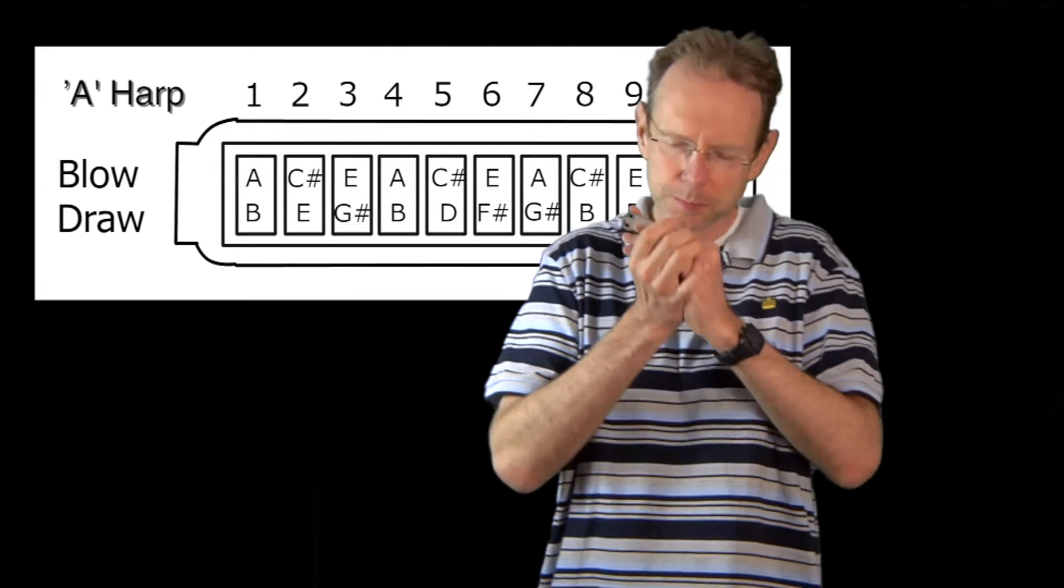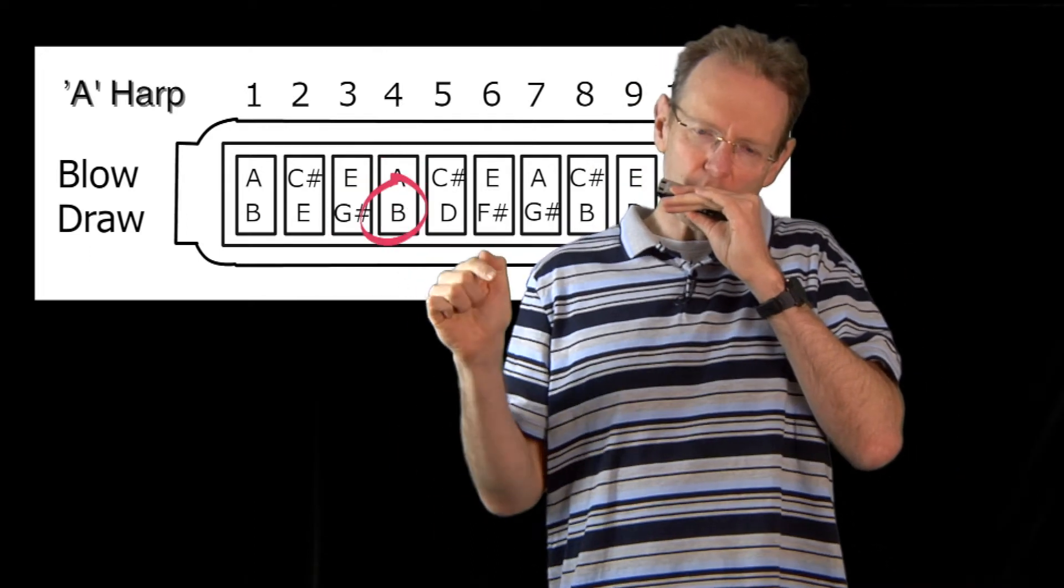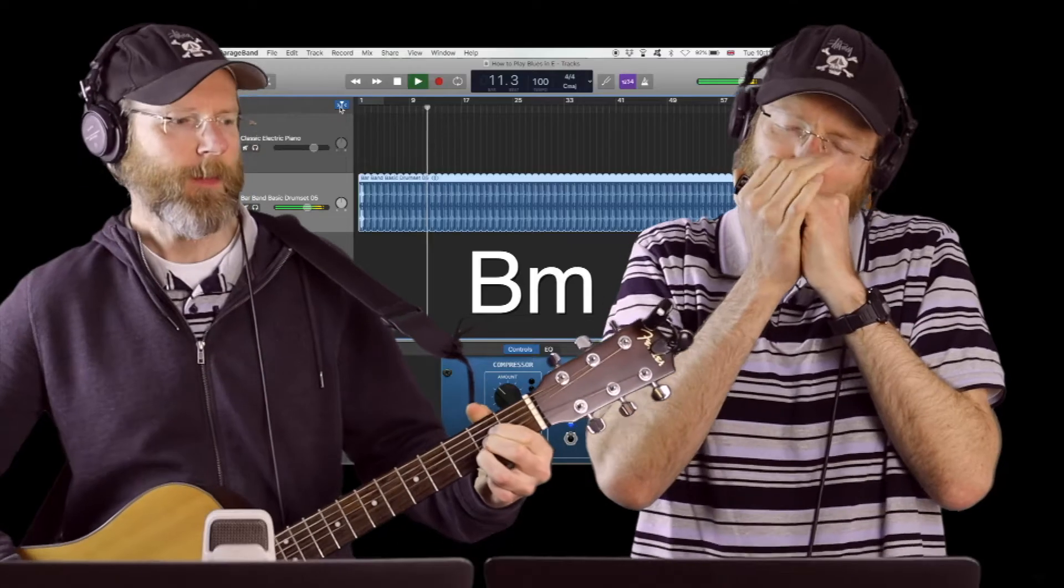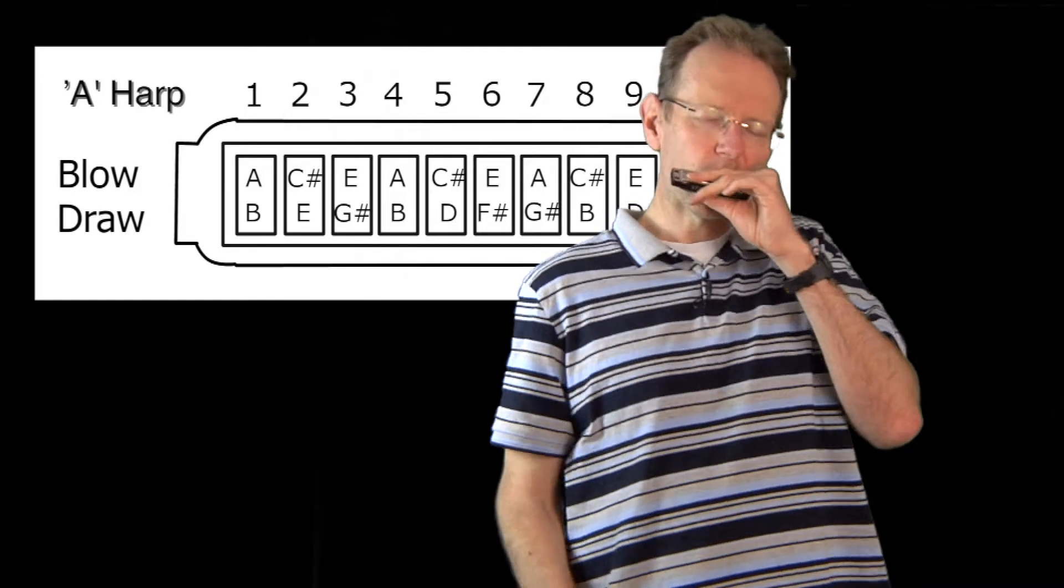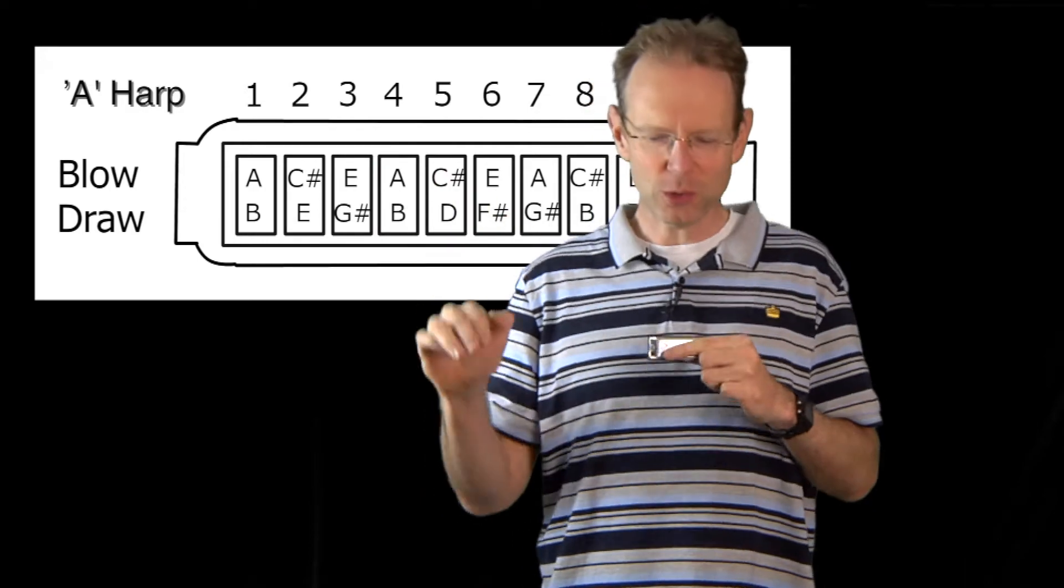Okay, now we're going to the B minor. So, it's pulling out on the fourth hole.